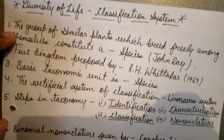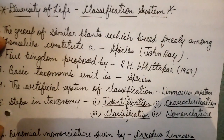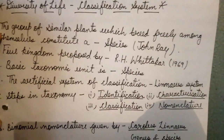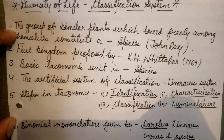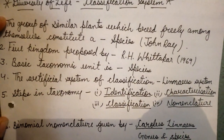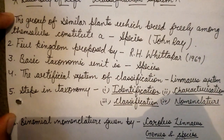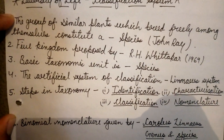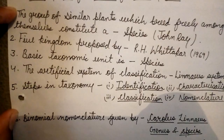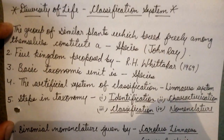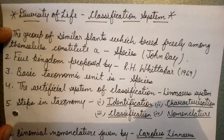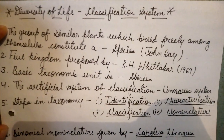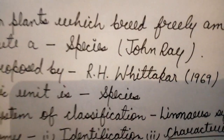The group of similar plants which breed freely among themselves constitute a species, and the definition of species was first given by John Ray.